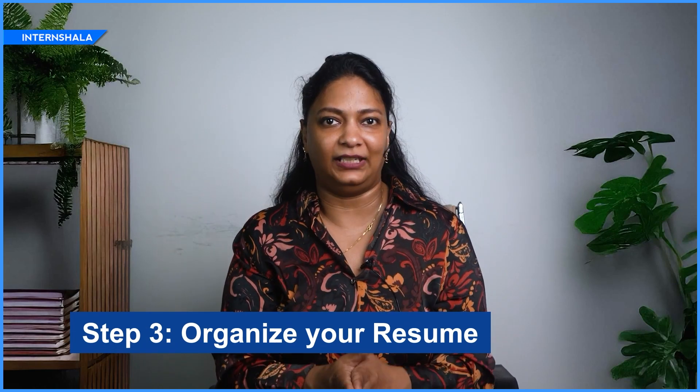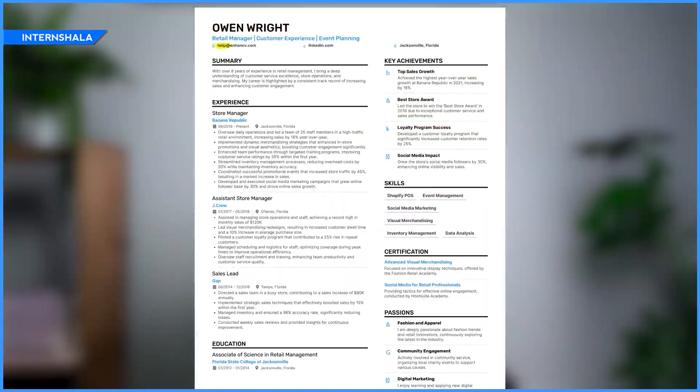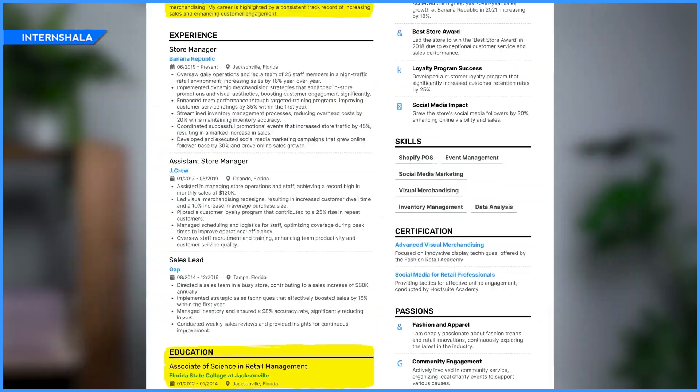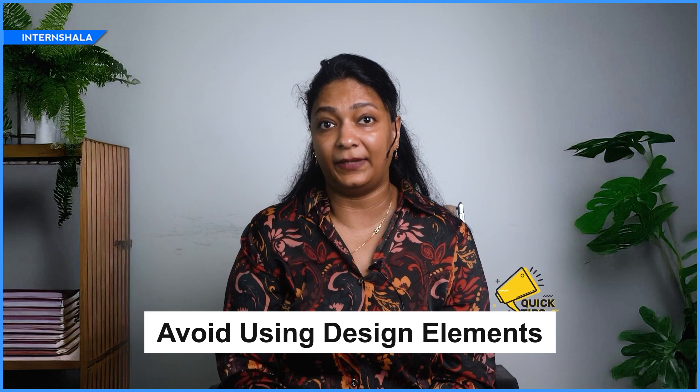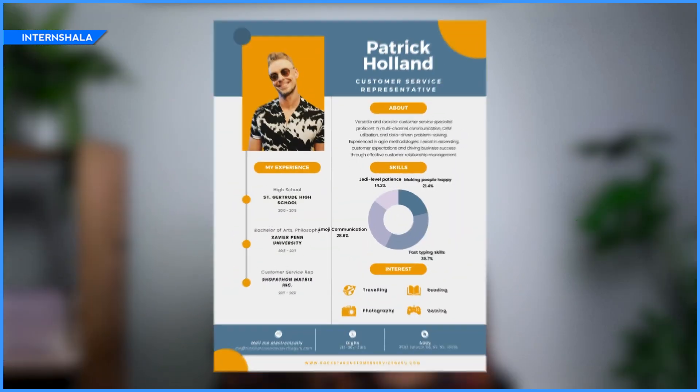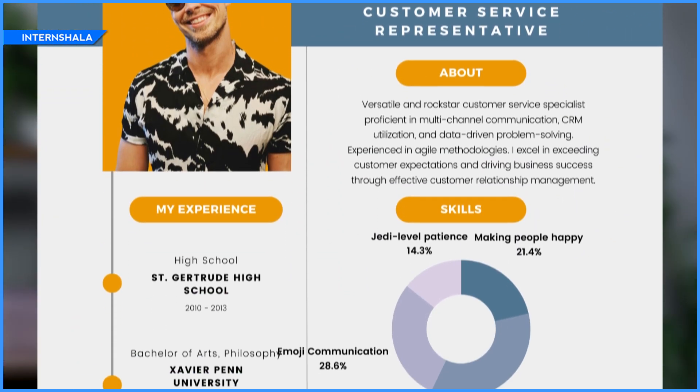Then comes Step 3, which is organizing your resume into clear and standard sections: your contact information, career objective, education, skills, and experience. This simple structure makes it easier for both ATS and the hiring manager to find information quickly. Another helpful tip is to avoid using fancy elements like headers, columns, tables, or graphics.